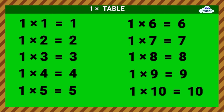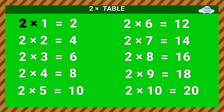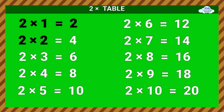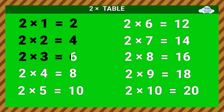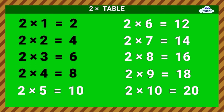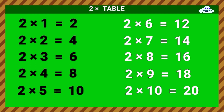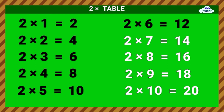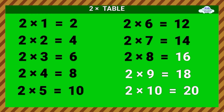1 times 7 equals 7. 1 times 8 equals 8. 1 times 9 equals 9. 1 times 10 equals 10. Two Times Table. 2 times 1 equals 2. 2 times 2 equals 4. 2 times 3 equals 6. 2 times 4 equals 8.